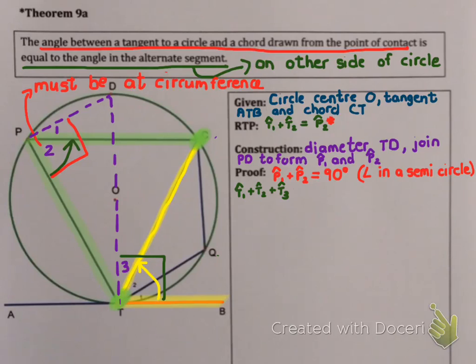I also know that angle T1 plus T2 plus T3 will be 90. And that was theorem 7. Tangents are perpendicular to radii. But this means that angle P1 plus P2 together must be equal to angle T1 plus T2 plus T3 because both of these halves were equal to 90 degrees. So they must equal to each other. So there's no reason for that statement. It's a logical conclusion from my two lines before.